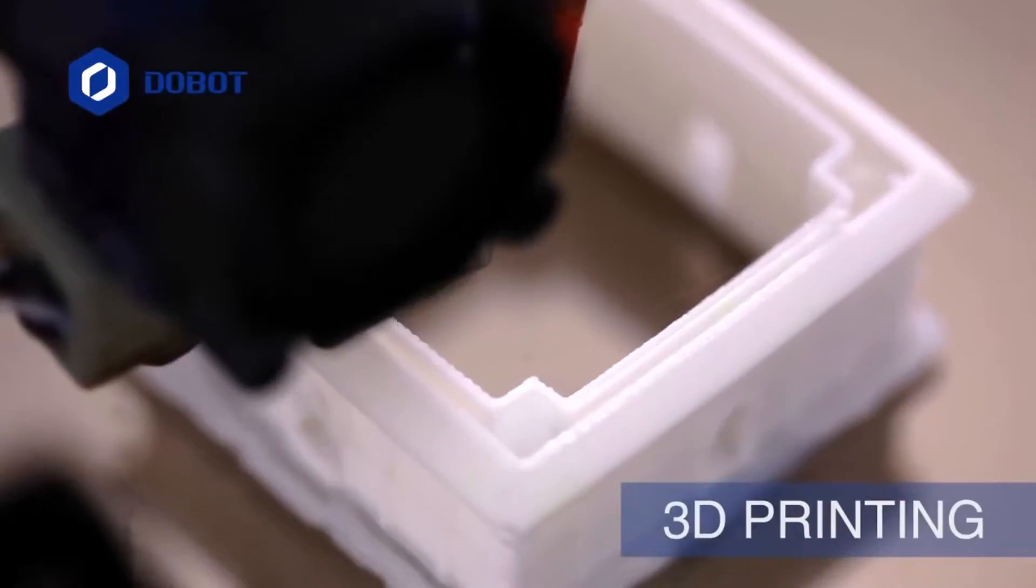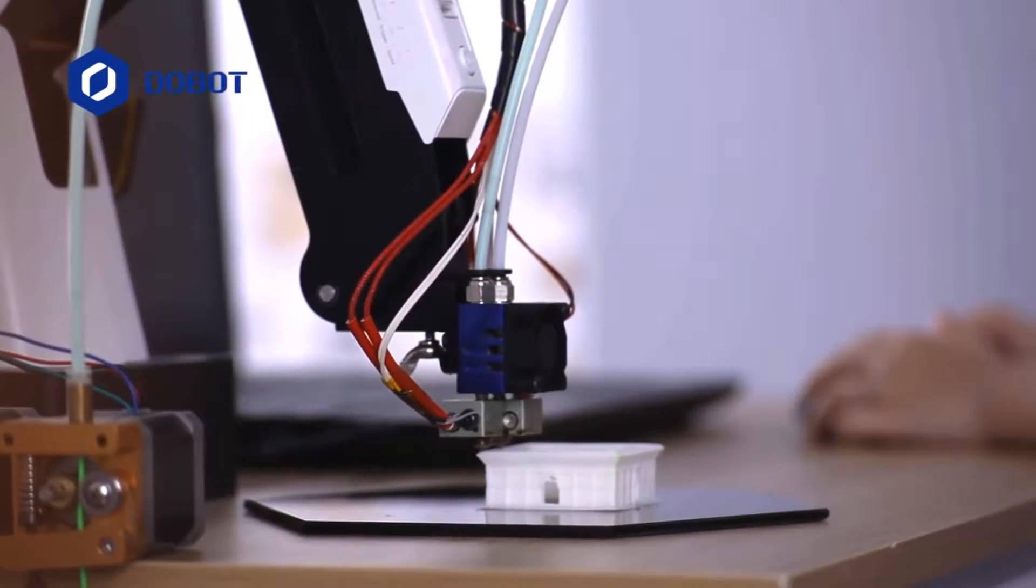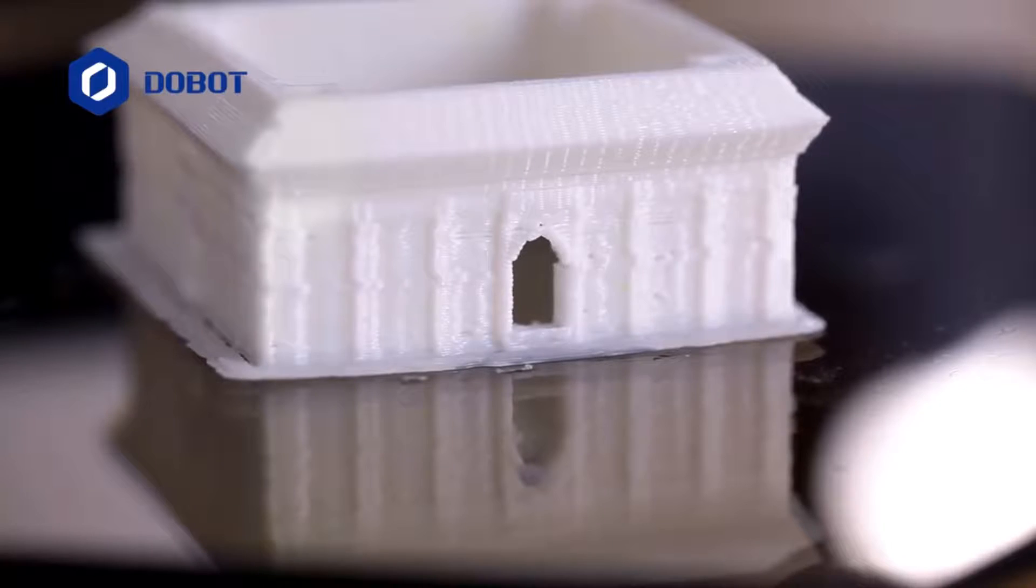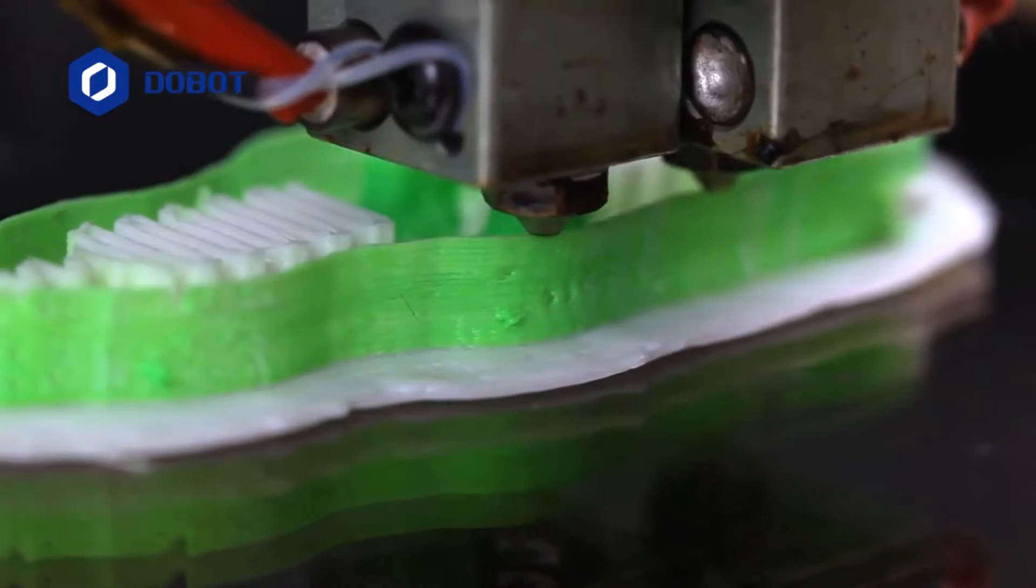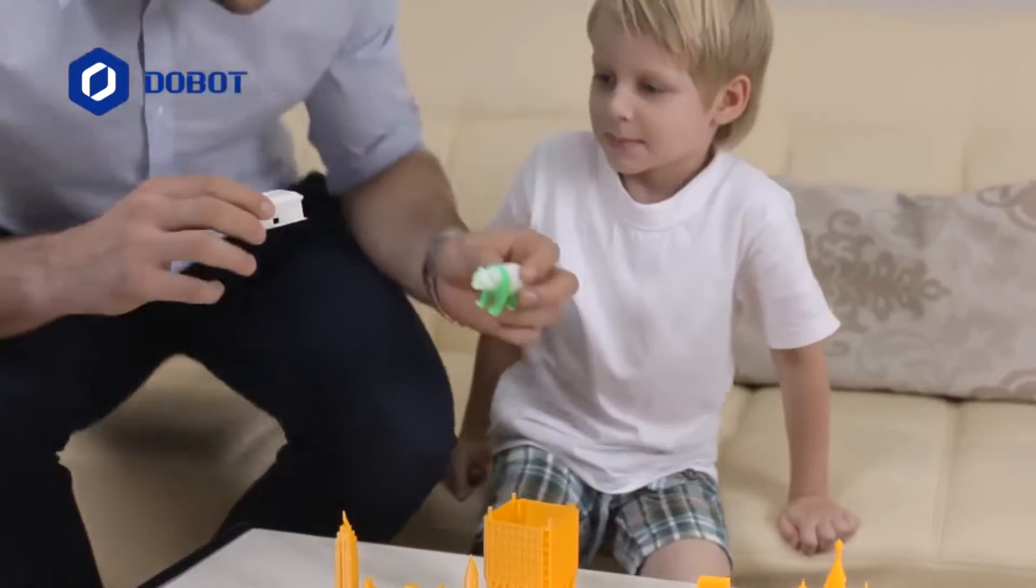DuBot Magician can do splendid 3D printing. As a robotic arm, it's so precise that you can find plenty of details in the smoothly printed models. Get creative with a double color printing head and create original things like toys for your kids.